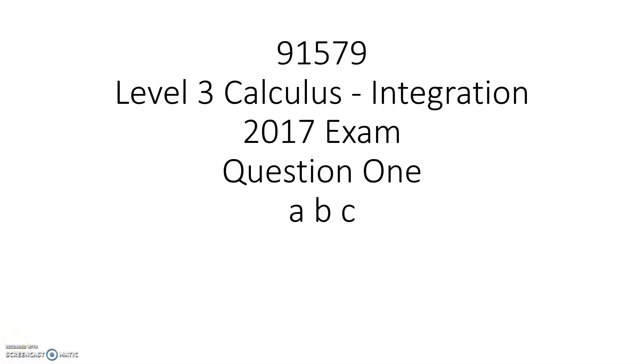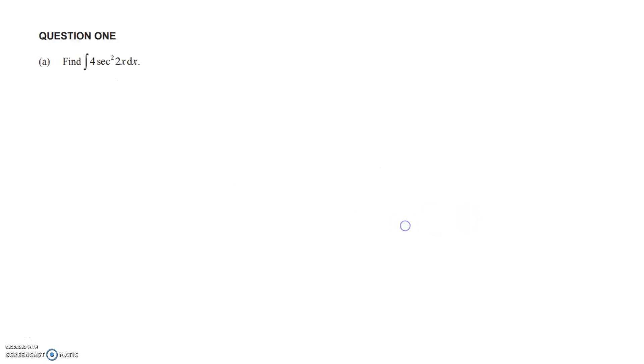Kia ora Year 13, here are the first three questions from question one of last year's integration exam. So the first one requires us to find this integral. Now you're given your formula sheet and it will show you that the derivative of tan x is sec squared x. So in this problem we know that the integral is going to be in the form of tan of 2x. But if we look at that and differentiate it back, we're going to get 2 sec squared 2x. But we want to get 4 sec squared 2x, so we need to multiply by 2. So it's 2 tan 2x plus c.